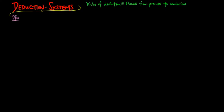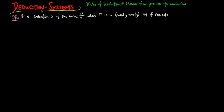We begin with the definition. A deduction is of the form gamma over sigma, and we say 'if gamma then sigma,' where gamma is a possibly empty list of sequents and sigma is a sequent. We write sigma double-line tau and say sigma and tau are equivalent to mean both 'if sigma then tau' and 'if tau then sigma.' We write simply sigma when gamma is empty and omit the line over it.